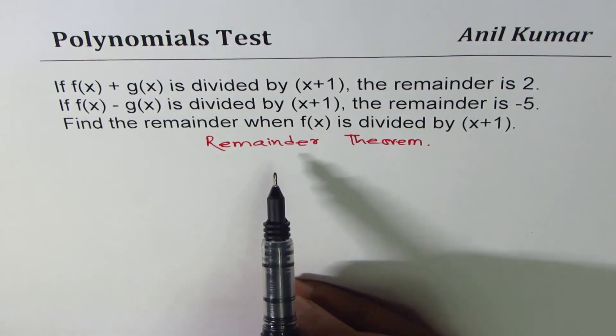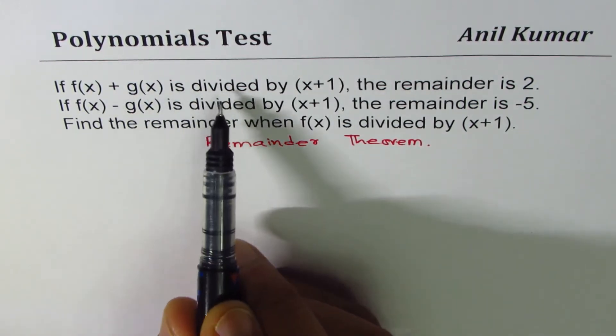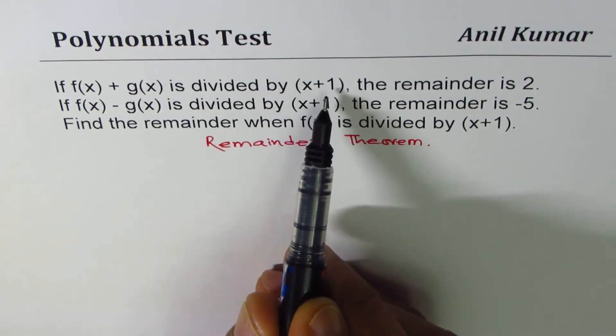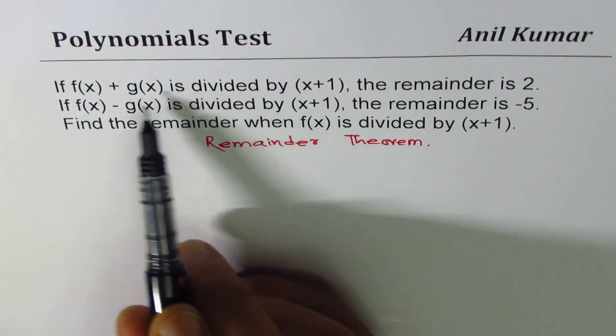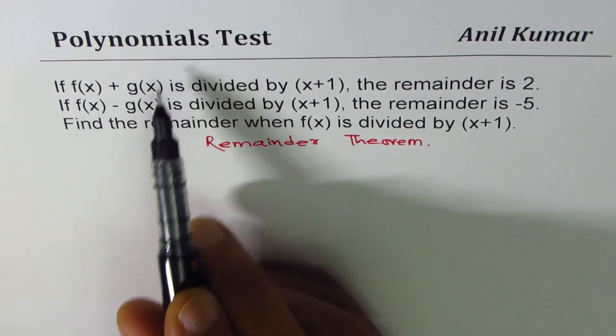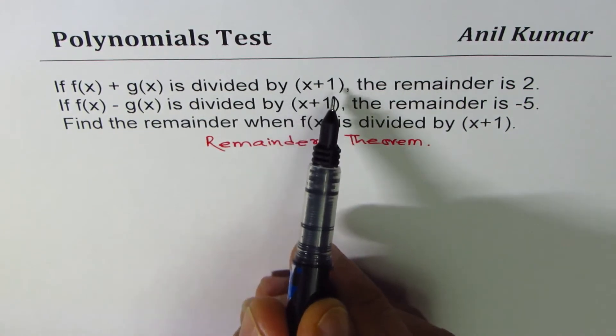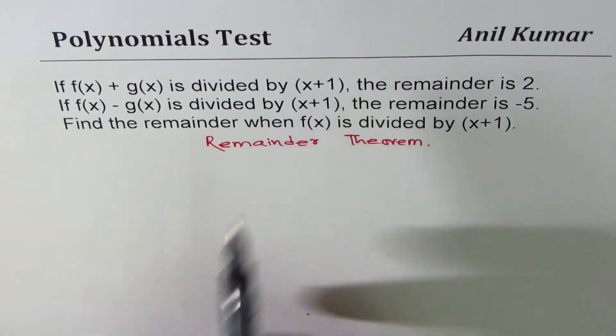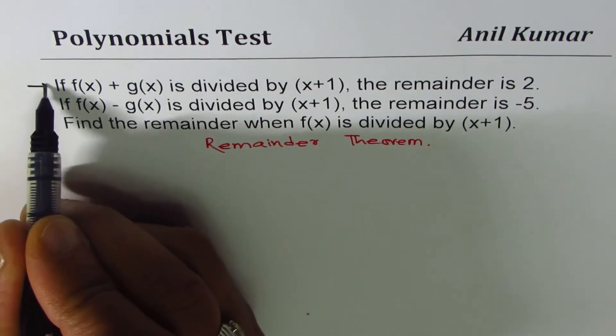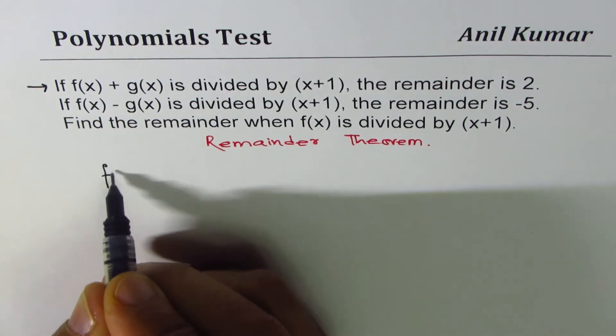If f(x) plus g(x) is divided by x plus 1, the remainder is 2. When you divide a polynomial function by, in this case x plus 1, the remainder is related with its value at minus 1. So this particular statement gives us an equation which is f of minus 1 plus g of minus 1.